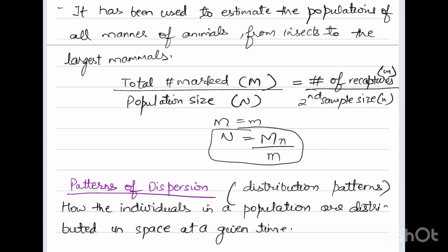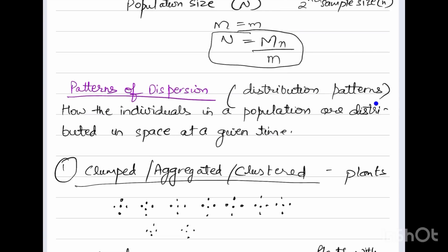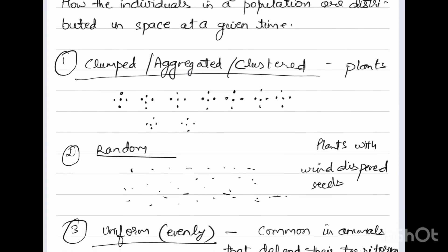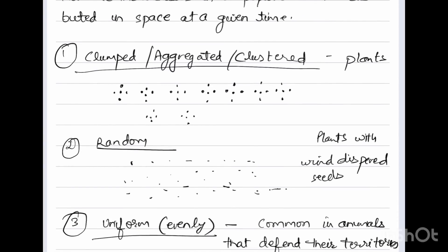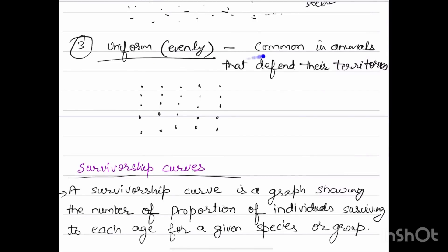Patterns of dispersion: how the individuals in a population are distributed in space at a given time. First way is clumped, aggregated, or clustered, usually plants distribute this way with uniform, equally spaced and similar patterns. Second, we have random method, plants with wind-dispersed seeds are randomly placed anywhere. Next we have uniform, evenly distributed, which is common in animals that defend their territories.